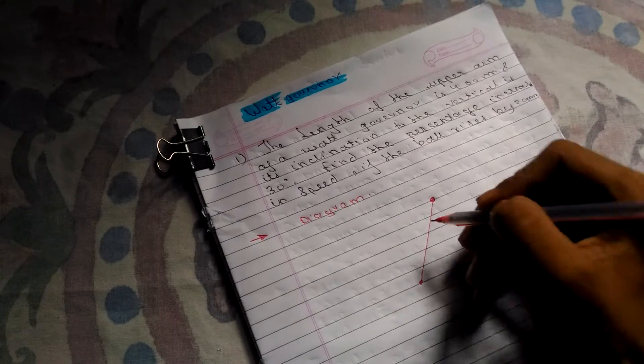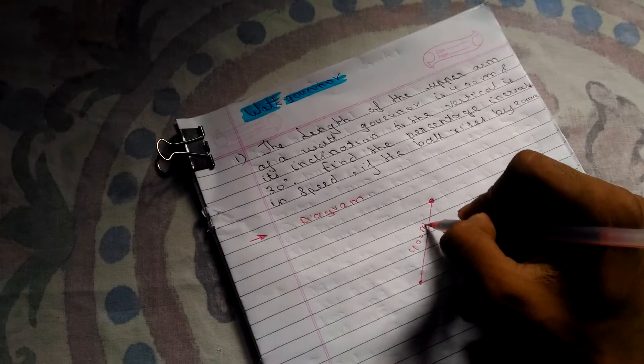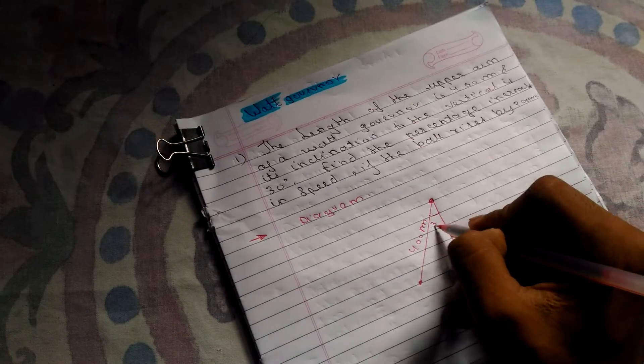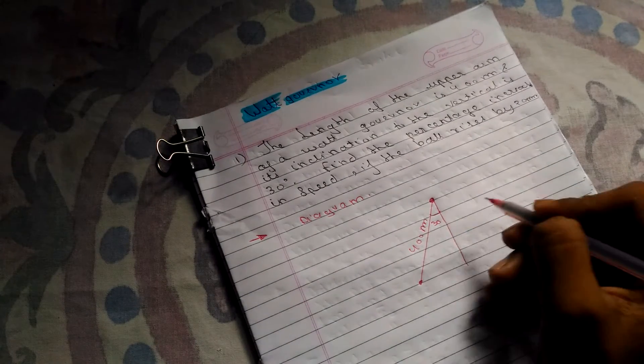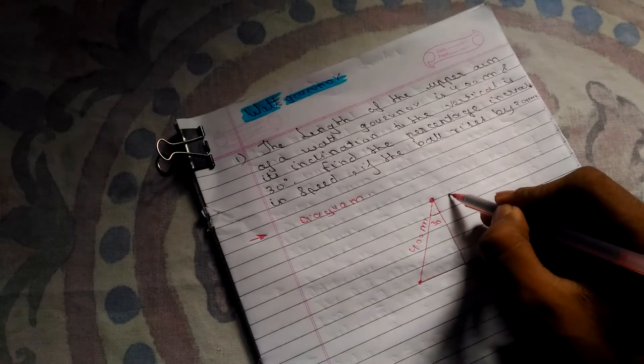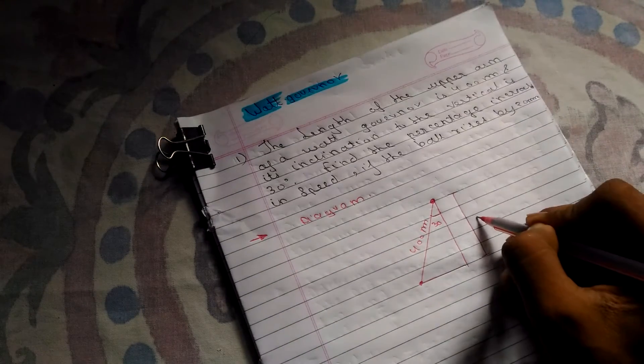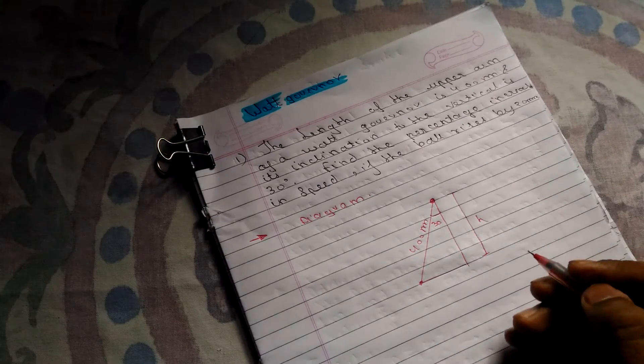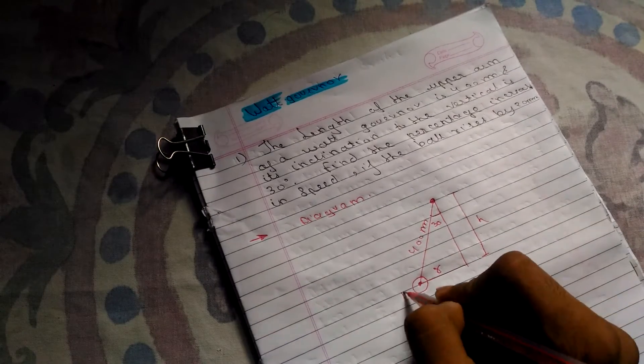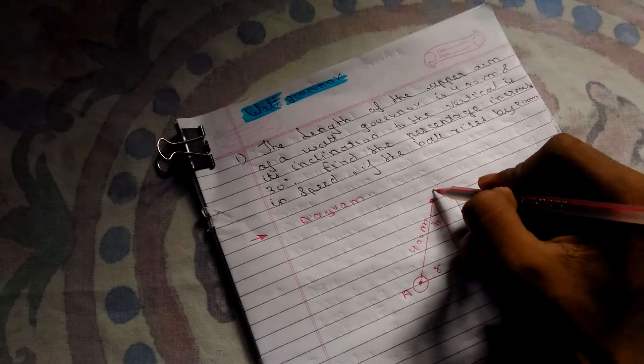It has been said the arm is 400 mm and to the vertical it is 30 degrees. This is the height, initial height, and this is R, and this is the ball itself at A and O.